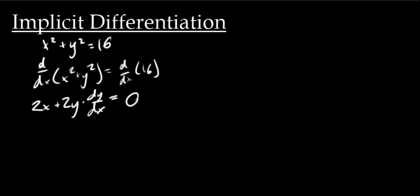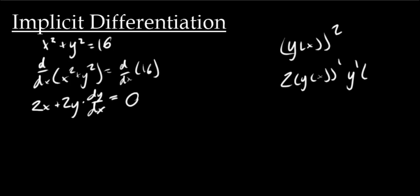Let me show why that is. Basically, we know that y is some function of x, but we don't know what it is. So say instead we had y(x) squared and we were told to find the derivative — we'd just apply the chain rule and get 2 times y(x) to the first power times y prime of x. What's going on with our implicit differentiation is the exact same thing, except instead of saying y(x) we're just saying y.